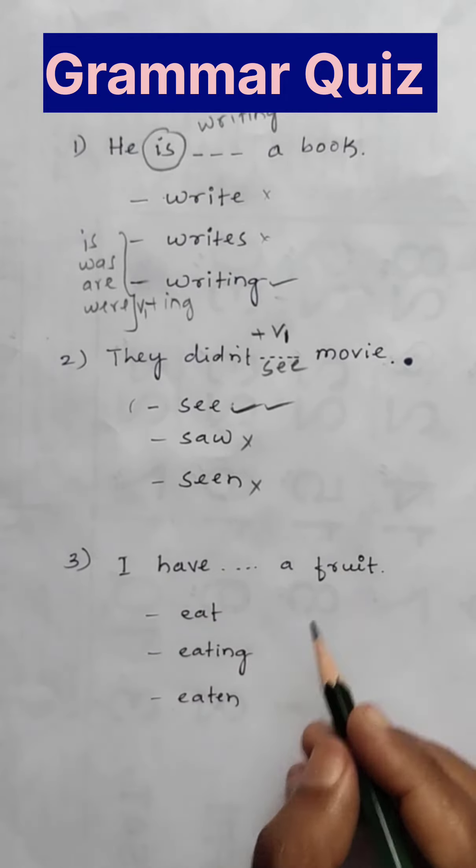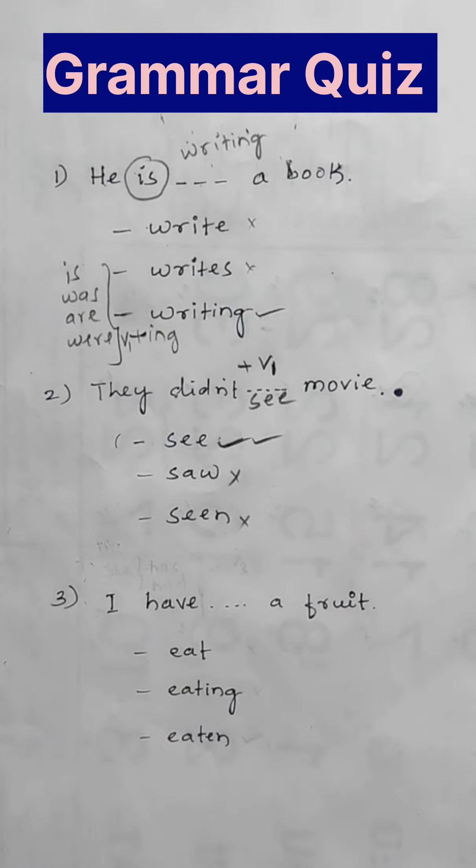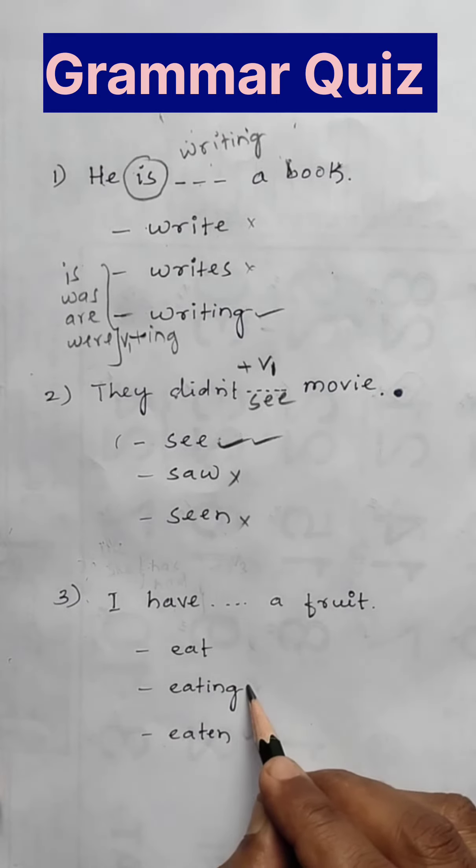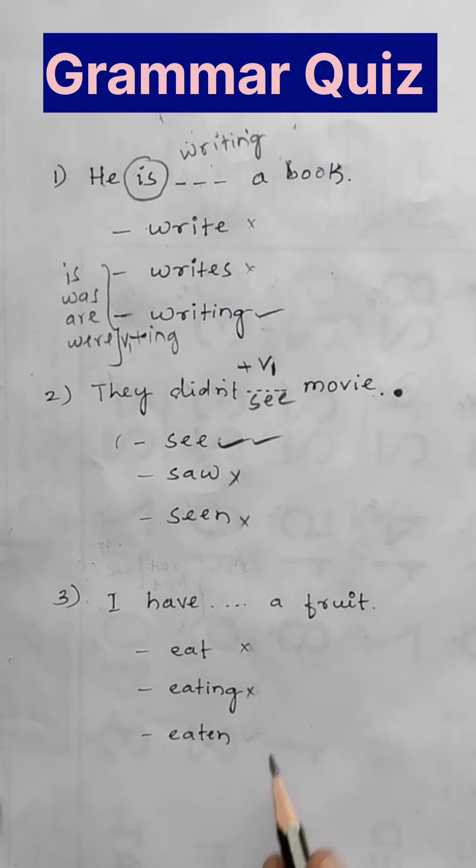And third one. I have blank a fruit. What will come? Eat will not come. Eating will not come. Eating? No. Eat? No. So after 'have'...